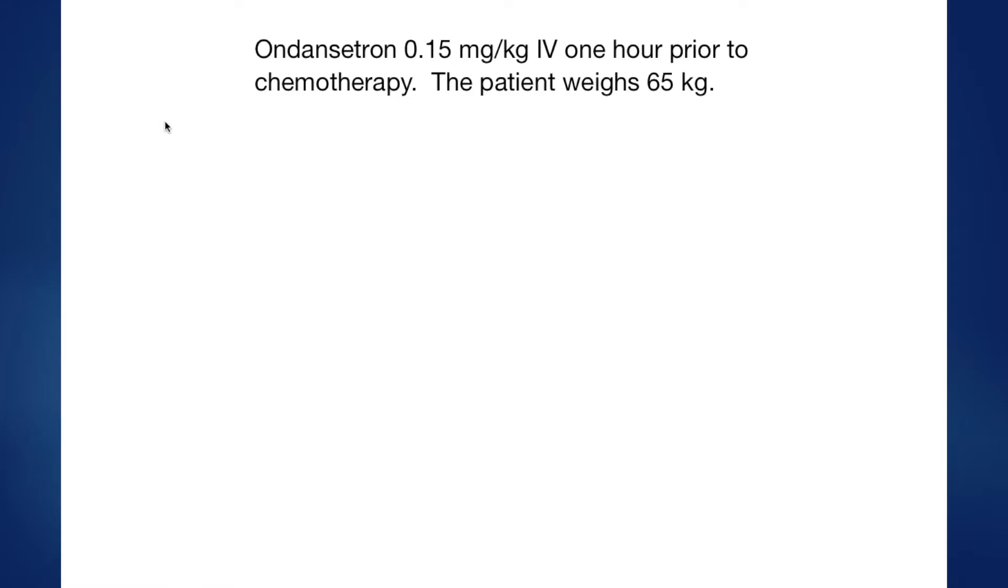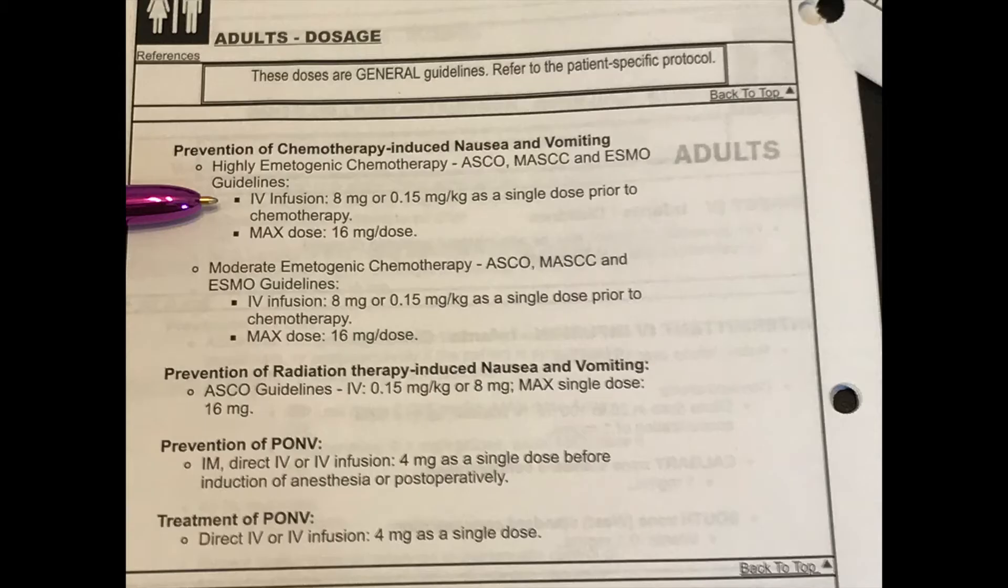Let's begin with an example of ondansetron 0.15 milligrams per kilogram IV one hour prior to chemo, and our patient weighs 65 kilograms. We need to begin with our parenteral monograph. Looking at the guidelines here I do see that 0.15 milligrams per kilo is a good dose, it's a safe dose.